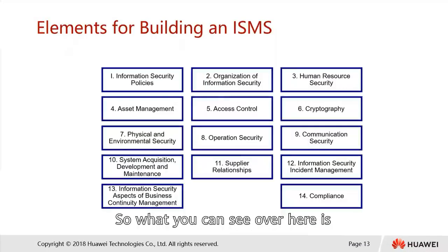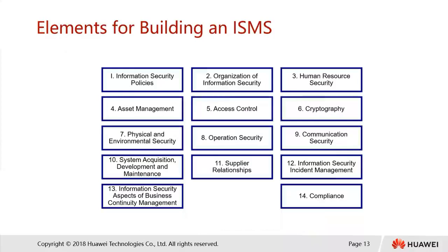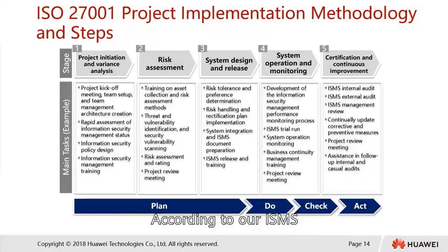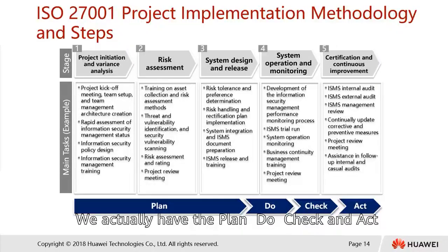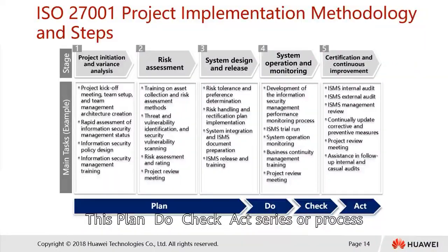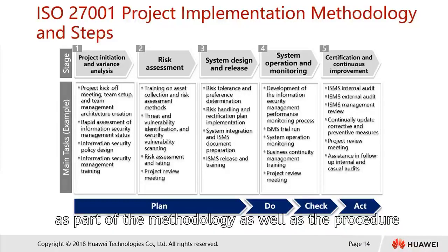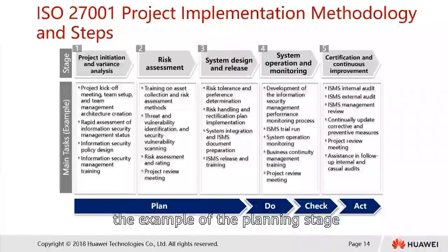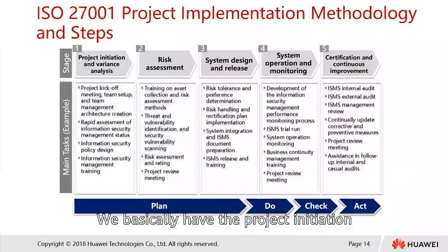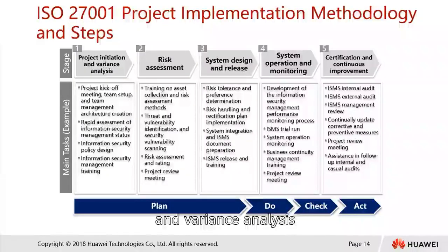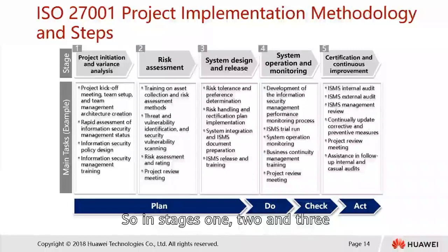What you can see here are the 14 control areas in ISO 27002 mentioned earlier. According to ISMS, the Plan-Do-Check-Act series of processes can be implemented in a project as part of the methodology and procedure. In the planning stage, we have project initiation, variance analysis, followed by risk assessment, and then system design and release. Stages 1, 2, and 3 involve the methodology that must be done under planning.